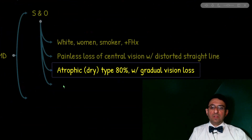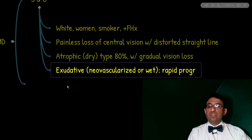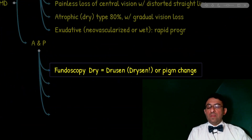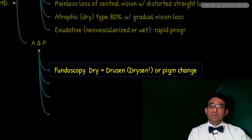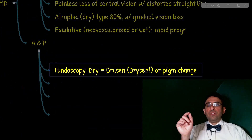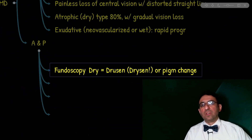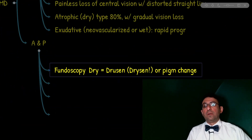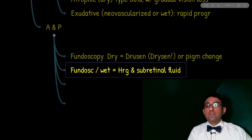There are two types of ARMD. The dry or atrophic type is the most common and is associated with gradual loss of vision. The exudative, neovascularized, or wet type is more rapidly progressive. On fundoscopy, the dry type shows pigment changes and drusen — white-yellow deposits that are accumulations of extracellular material. The wet type shows hemorrhage and subretinal fluid with or without drusen.